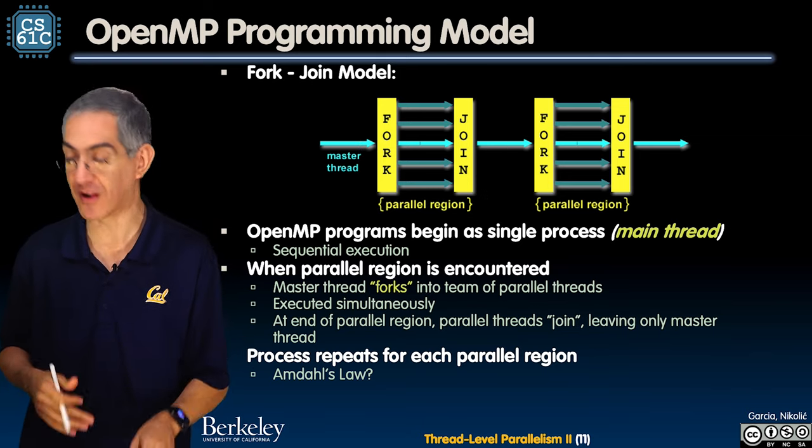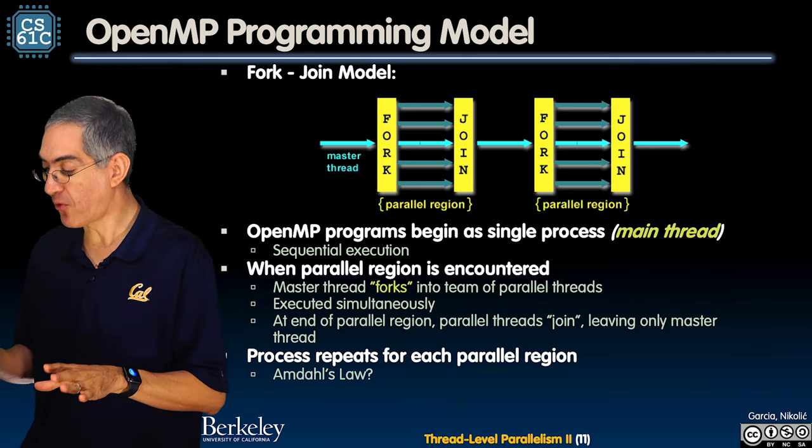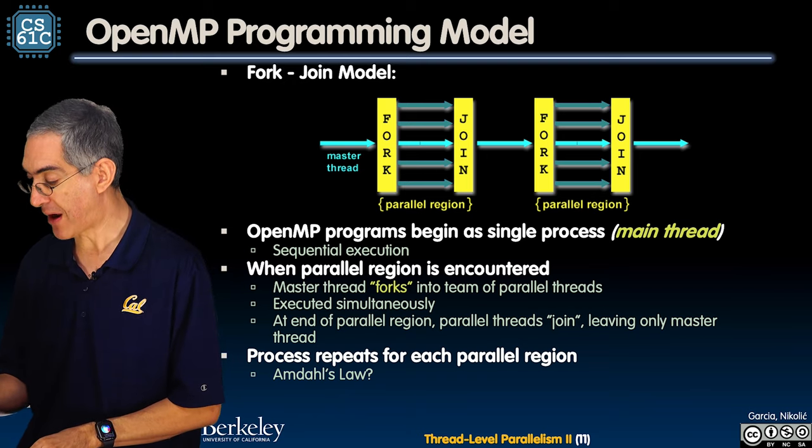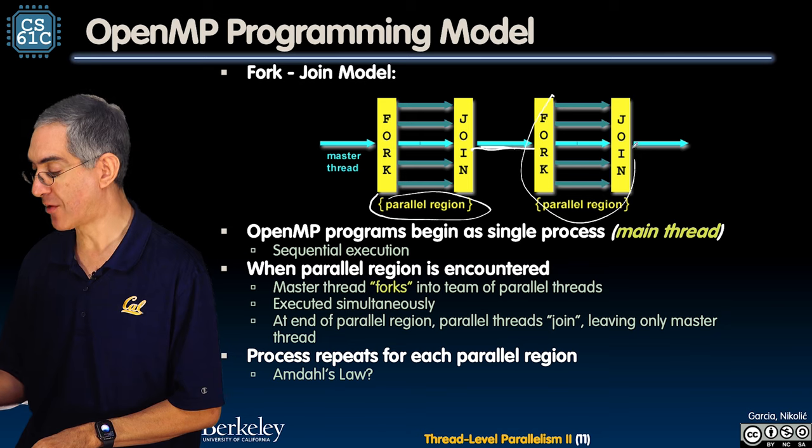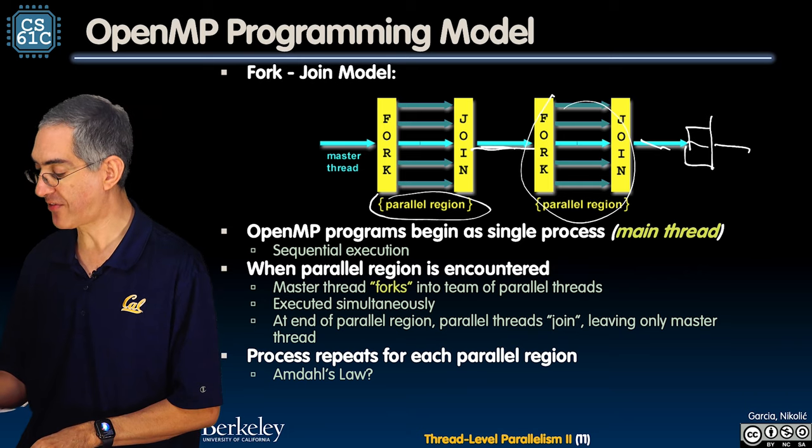Think about this: there's a parallel region, then a serial region, then a parallel region. This might only have three threads. You divide this up, so you have these serial regions and parallel regions. We love that.